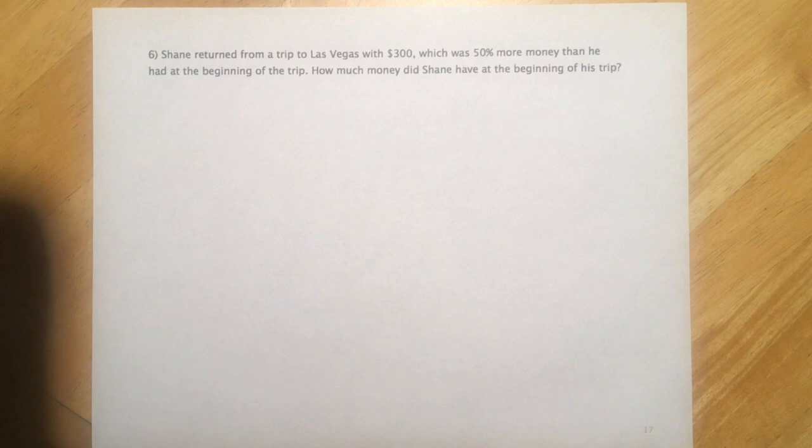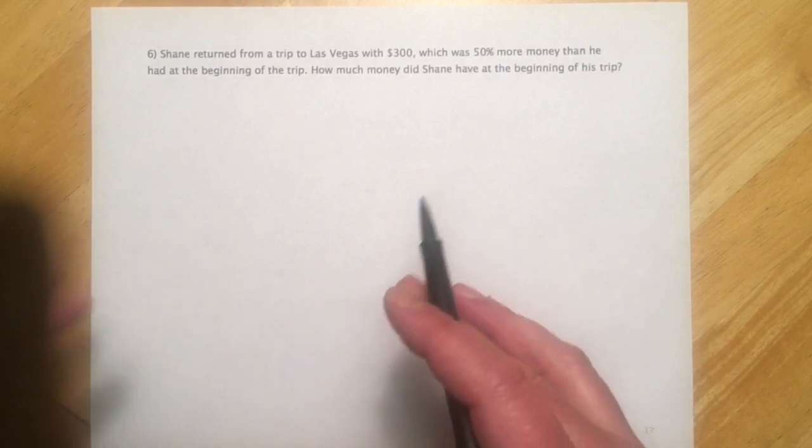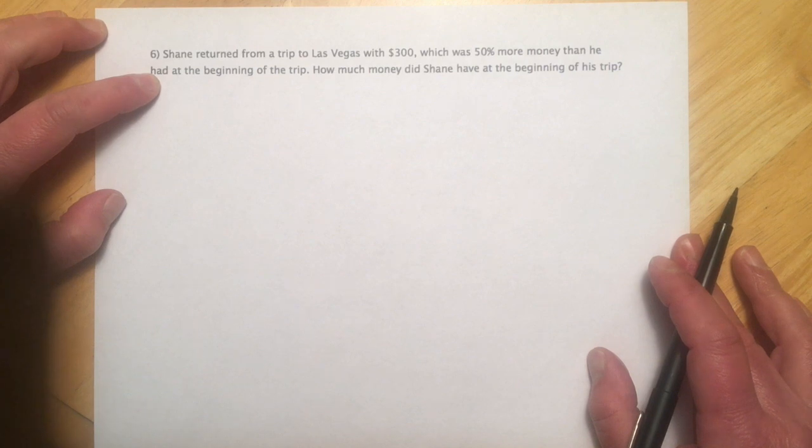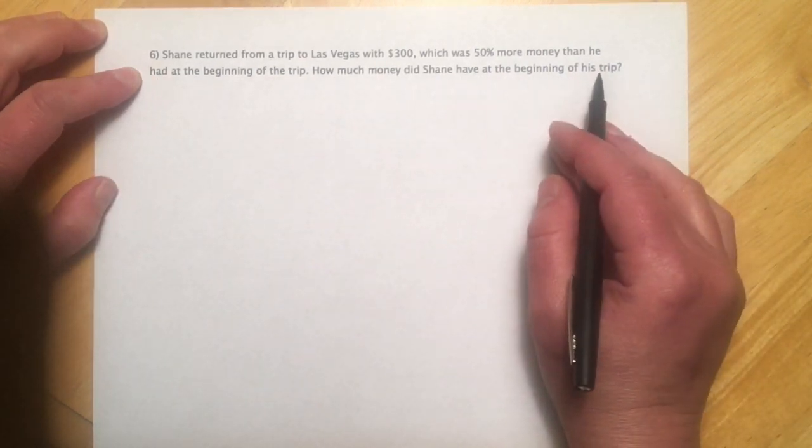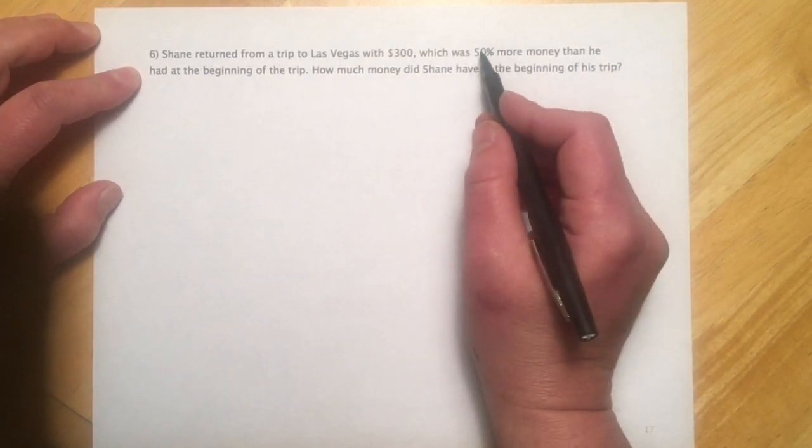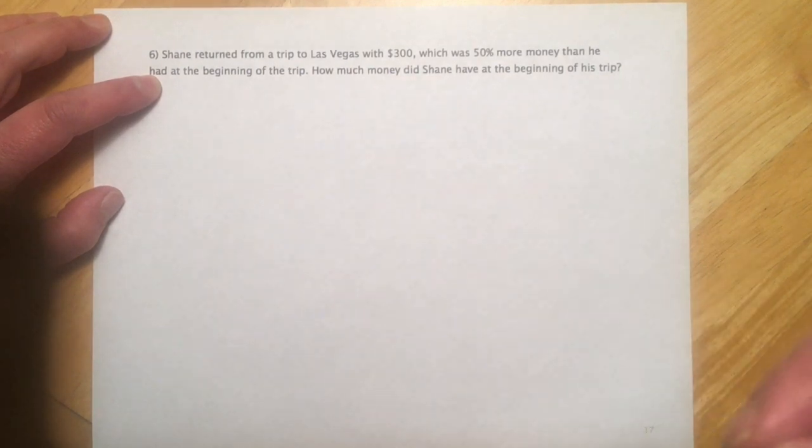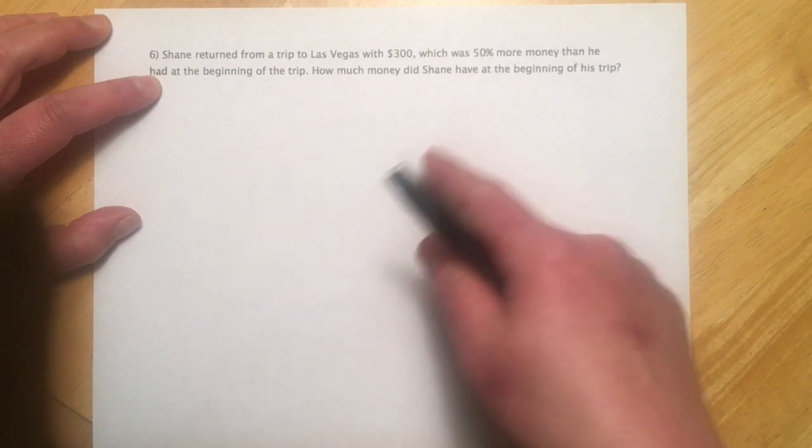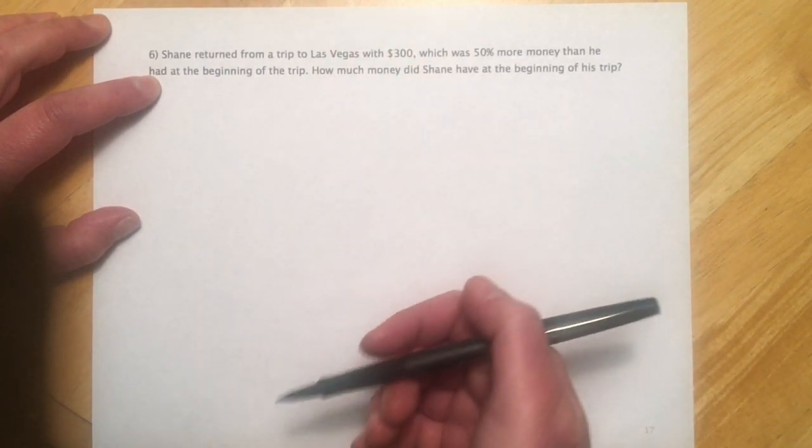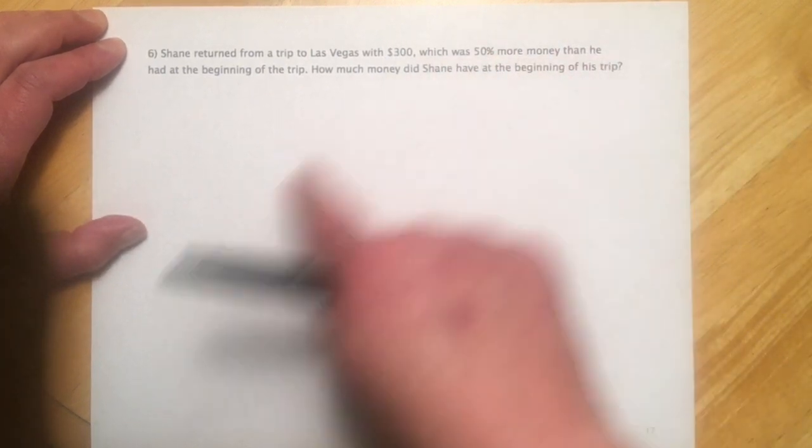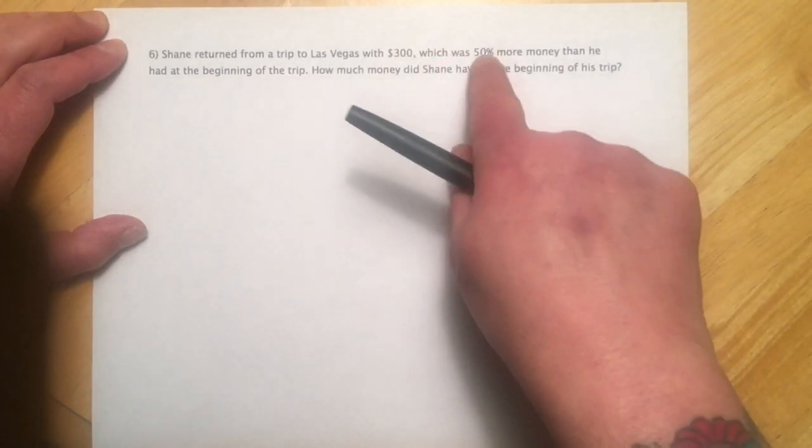And these next problems are the percent problems I talked about at the beginning. These are a little bit tricky, except that they're all the exact same thing. So once you figure out the trick to them, they're not so tricky. So Shane returned from a trip to Las Vegas with $300, which was 50% more money than he had at the beginning of the trip. How much money does Shane have at the beginning of his trip? So people read this and go, okay, he came back with $300, which was 50% more. So they go 50% of $300, that's $150. Take that off, so he had $150 at the beginning, which is unfortunately totally not right. Because think about if you said 50% of $150, that would be $75, add that on doesn't get you back to $300. So something's wrong there. You can't just do percent times the number that's there, because it's 50% more of what he had at the beginning, not at the end. So you take 50% of the wrong number.